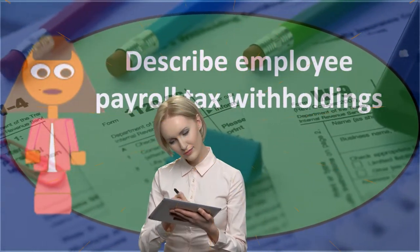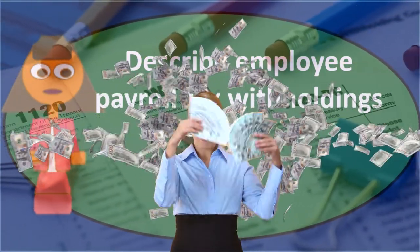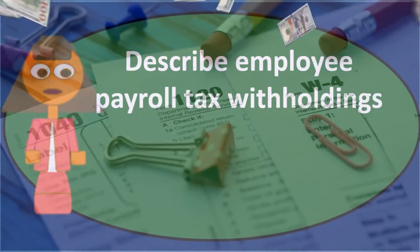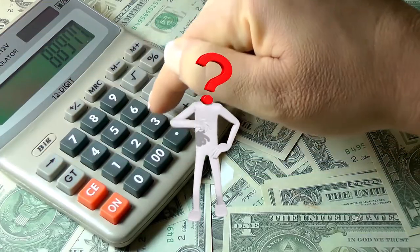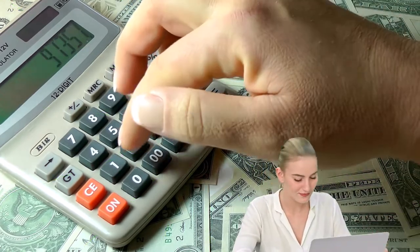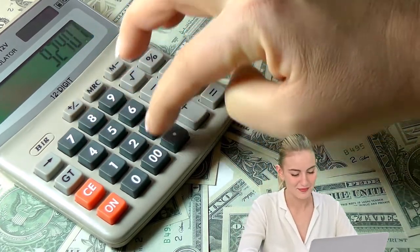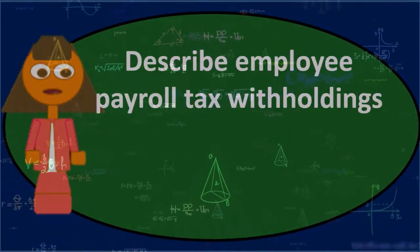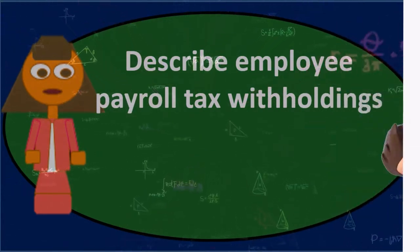The withholding will be based on marital status, income level, and the pay period when we think about a per-period withholding. By far, the federal income tax withholding is the most complex to calculate because of those factors. To calculate it, we need the marital status, the wage amount, and the number of allowances. We can then look at the tables provided by the IRS in Circular E to find the amount to be withheld.